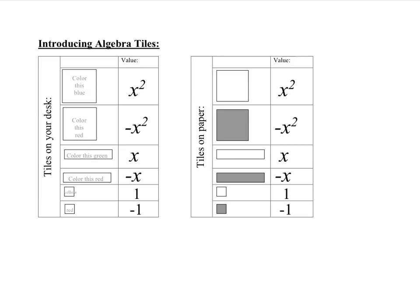You might be asking why these things are called x squared, x, and 1. If you take a look at this big square, we don't know the length of either side, but we could call each side x. So the area would be x squared, because x times x is x squared. The long rectangle matches the length of the x squared tile, so we call it x. The small unit tile is the same size as one side of our unit tiles — we call it 1 — and x times 1 is x. A unit tile has dimensions 1 by 1, and 1 times 1 is 1.